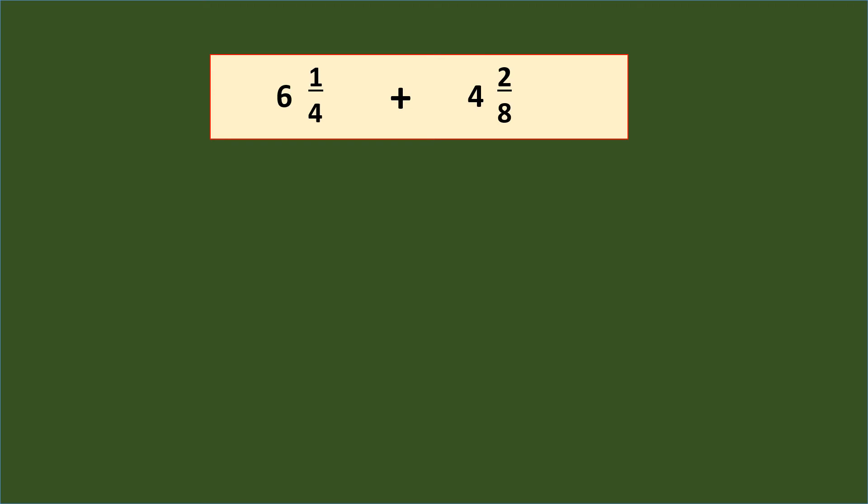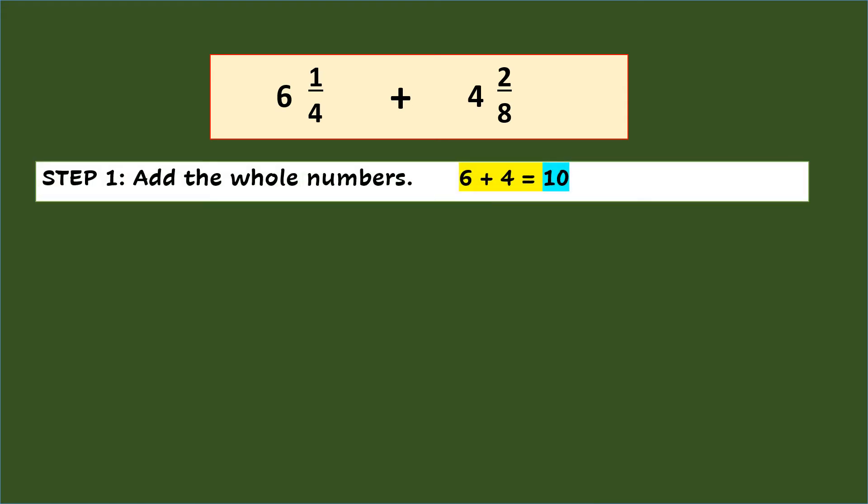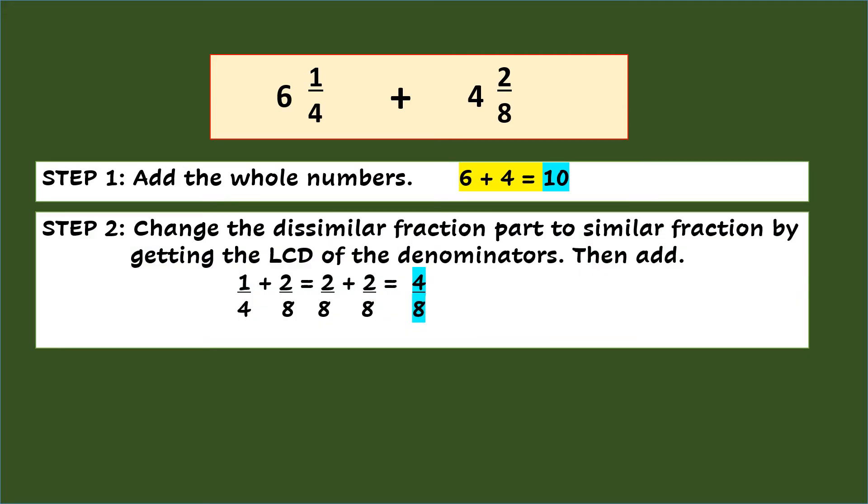In adding mixed fractions in dissimilar form like 6 and 1 fourth plus 4 and 2 eighths, step 1 is to add the whole numbers so that 6 plus 4 equals 10.